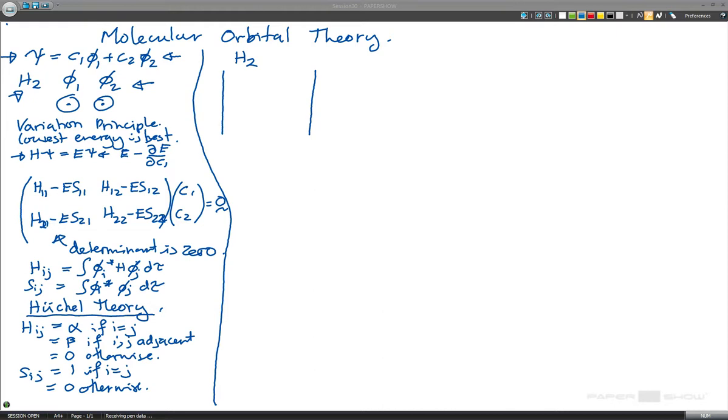Now we've got H1 and H2 here, so for H11, the rule is if i equals j we get an alpha, and Sij, if i equals j we get one, so that's alpha minus e we get in the top left hand corner. And the next one, H12, that's beta, and S12 is zero, so that's minus zero e. The bottom corner, again, one and two are adjacent, so H21 is beta, and H22 in this corner is again alpha, and it's minus e.